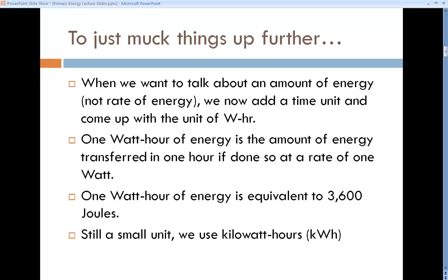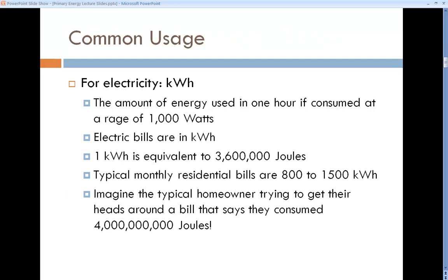A watt is not a high rate of energy. A night light is seven watts. If you have a night light on for one hour, it uses seven watt-hours of electricity, that's seven times 3,600 joules. The watt-hour is still a small unit.